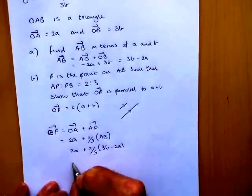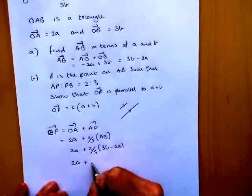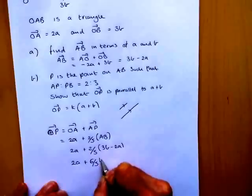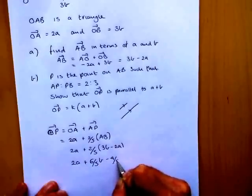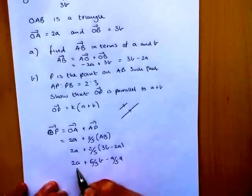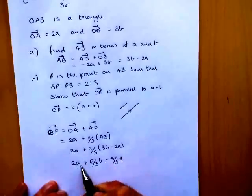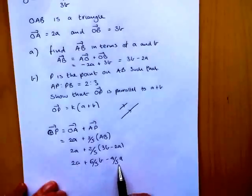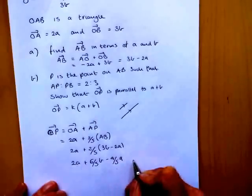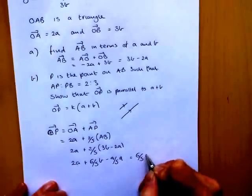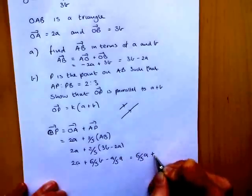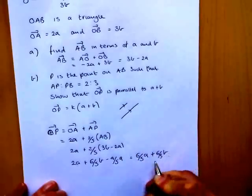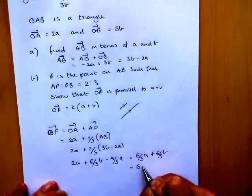So that's 2A plus 6 fifths B minus 4 fifths A. Now if we're going to do 2A minus 4 fifths A, you must think of your 2A as 10 fifths. Alright, 2A is 10 fifths. And so 10 fifths take 4 fifths is 6 fifths.